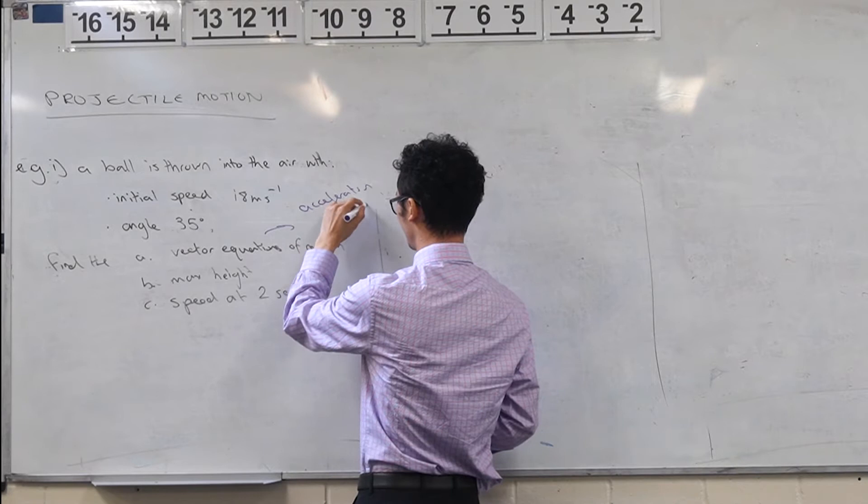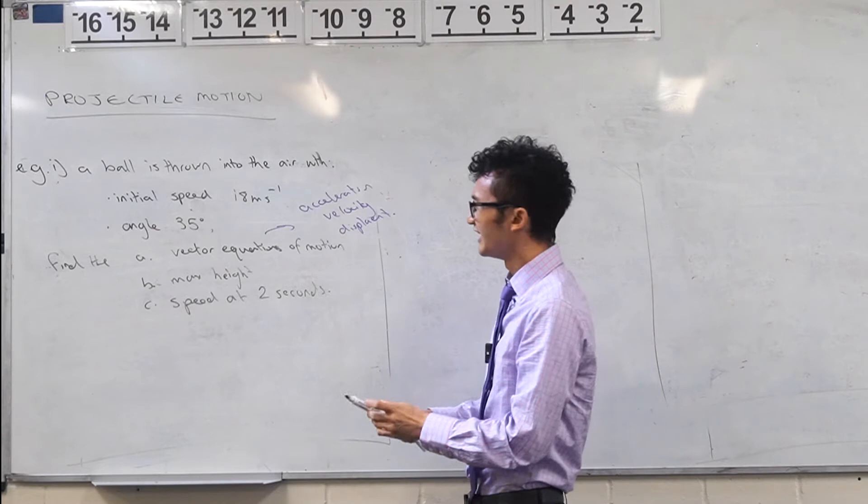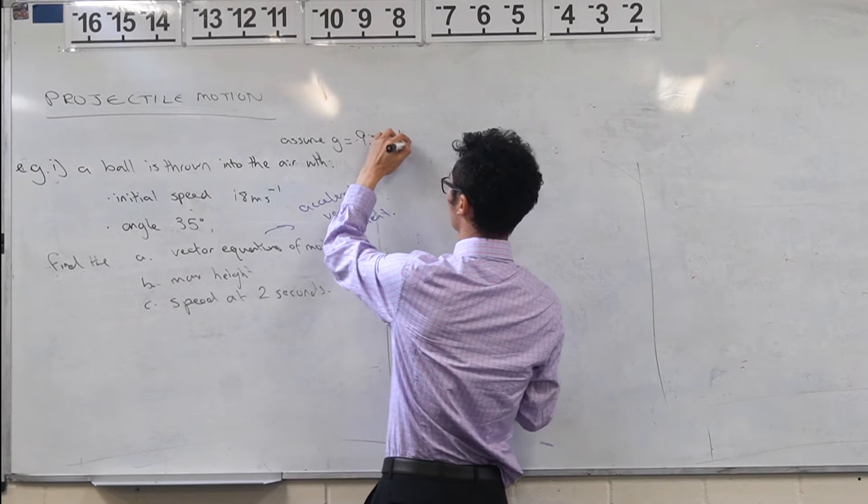So the acceleration you can assume because what was the acceleration we said? What did we assume it was? Yeah so depending on the question they'll tell you. So let's say they'll tell you assume g equals negative 9.8 meters per second squared. Okay so so far so good.